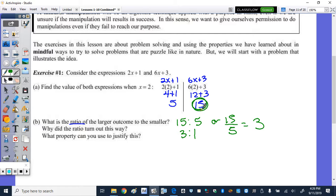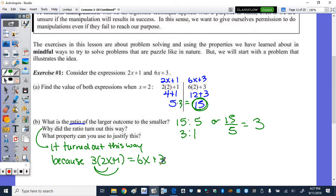Notice that 15 is 5 times 3. Why did it turn out this way? Well, it turned out this way because when you multiply 3 times 2x plus 1, you get 3 times 2x, 6x. 3 times 1, 3. What property can we use to justify that? That's the distributive property.